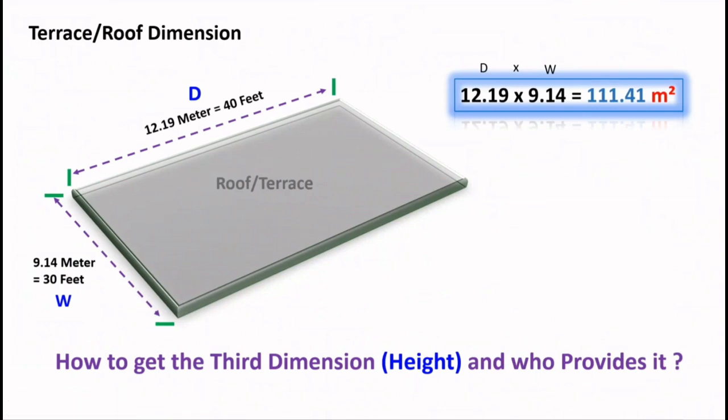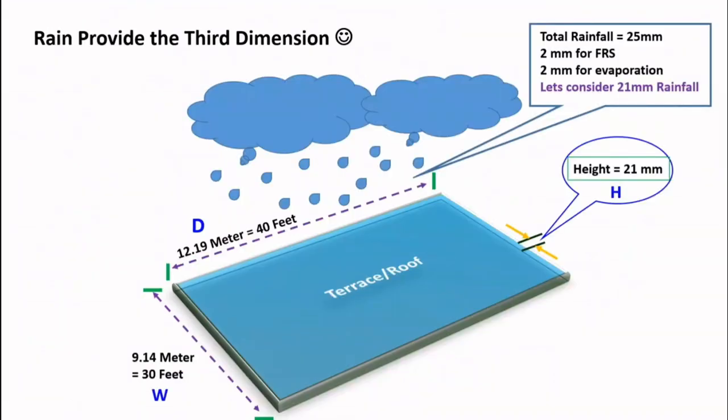Let's see how it looks. Terrace is two-dimensional, right? Basically what we'll get is width and depth. When you multiply depth with the width, we'll get the total area in square meter. Now what you need is height. The rain will provide the third dimension, that is height. So now we have everything to calculate the volume: we have width, depth, and height as well.